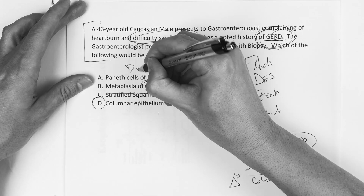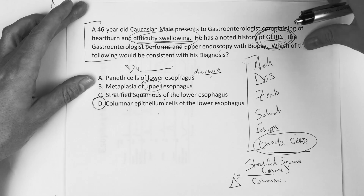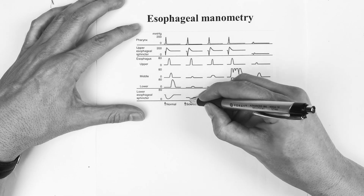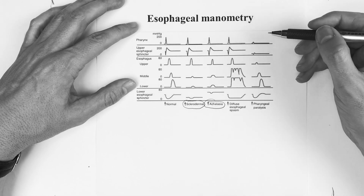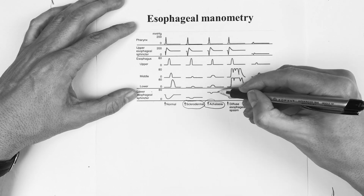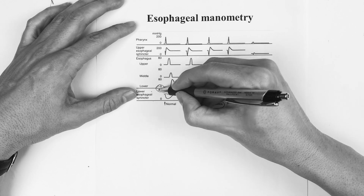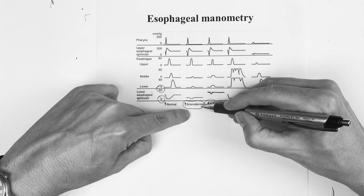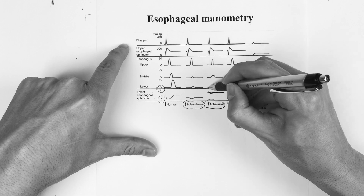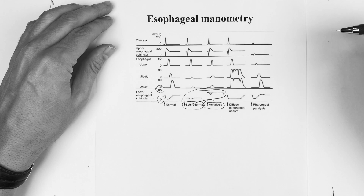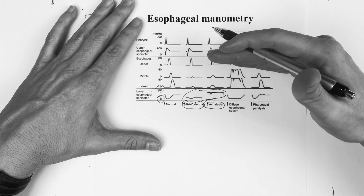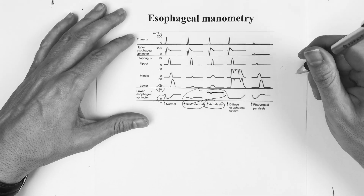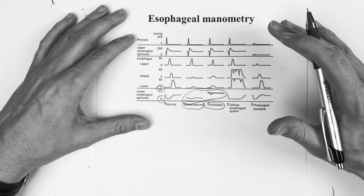One last point on manometry: be familiar with scleroderma versus achalasia. In achalasia, the lower esophageal sphincter tone is high — no relaxation, higher on the millimeters of mercury scale, no peristalsis. In scleroderma, it's atrophy — lower end of the scale. That's the key difference. If they say difficulty swallowing, make sure you can rattle off those six diagnoses and know the pathomnemonic features of each.